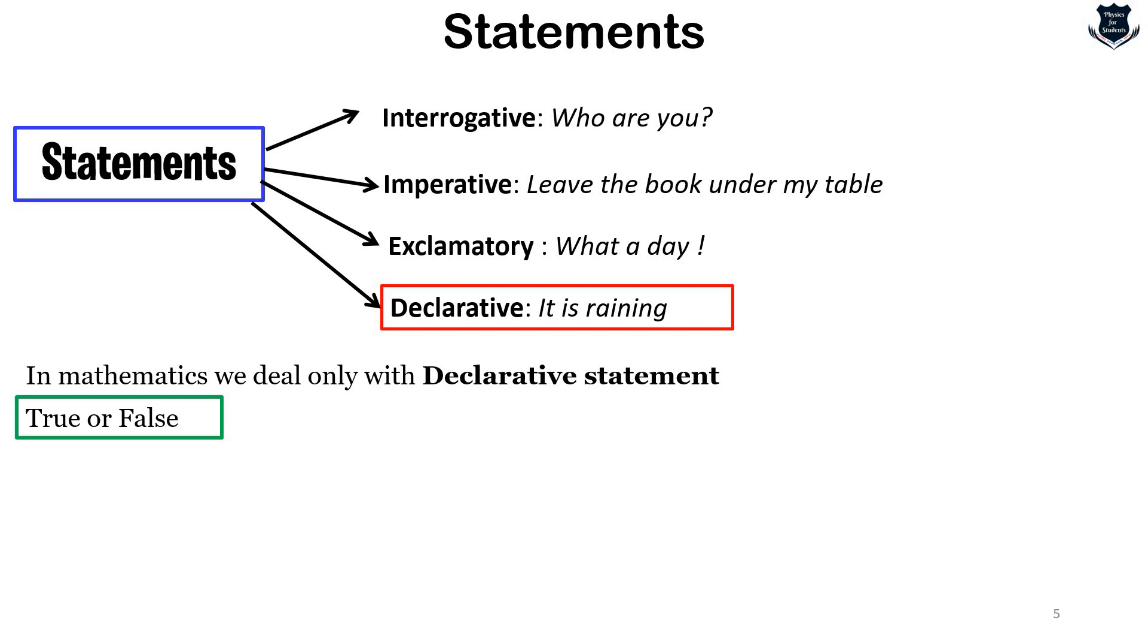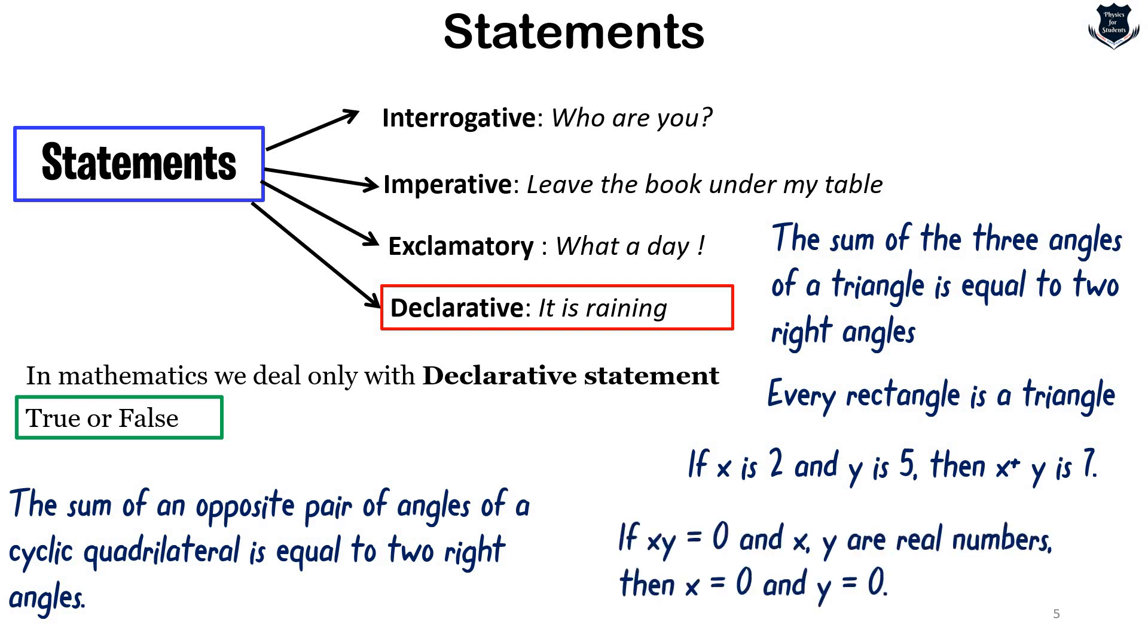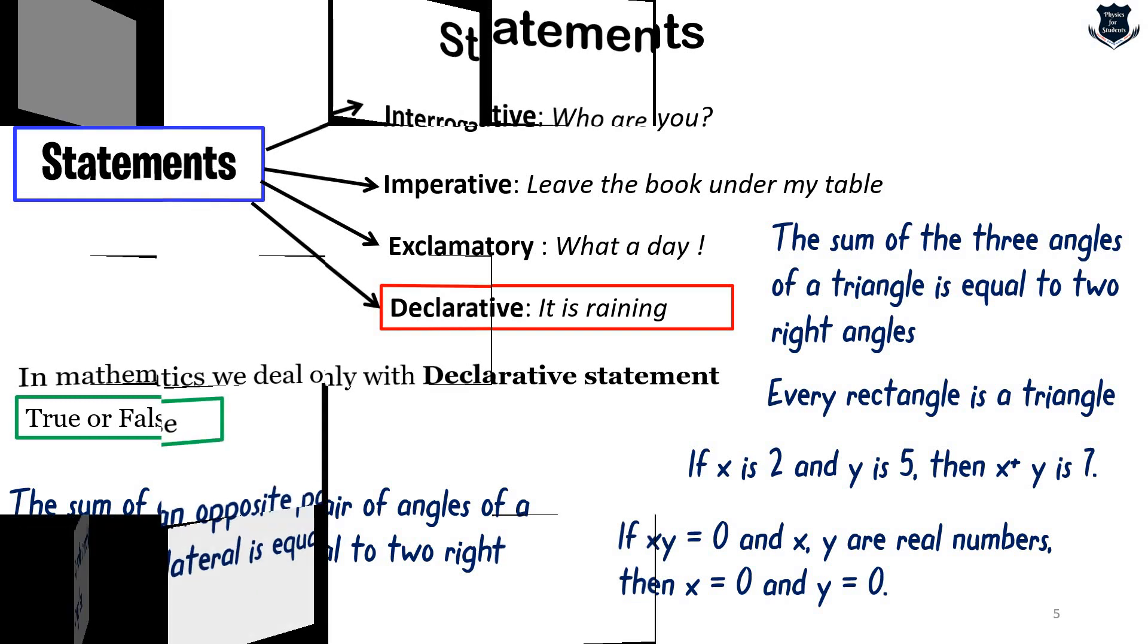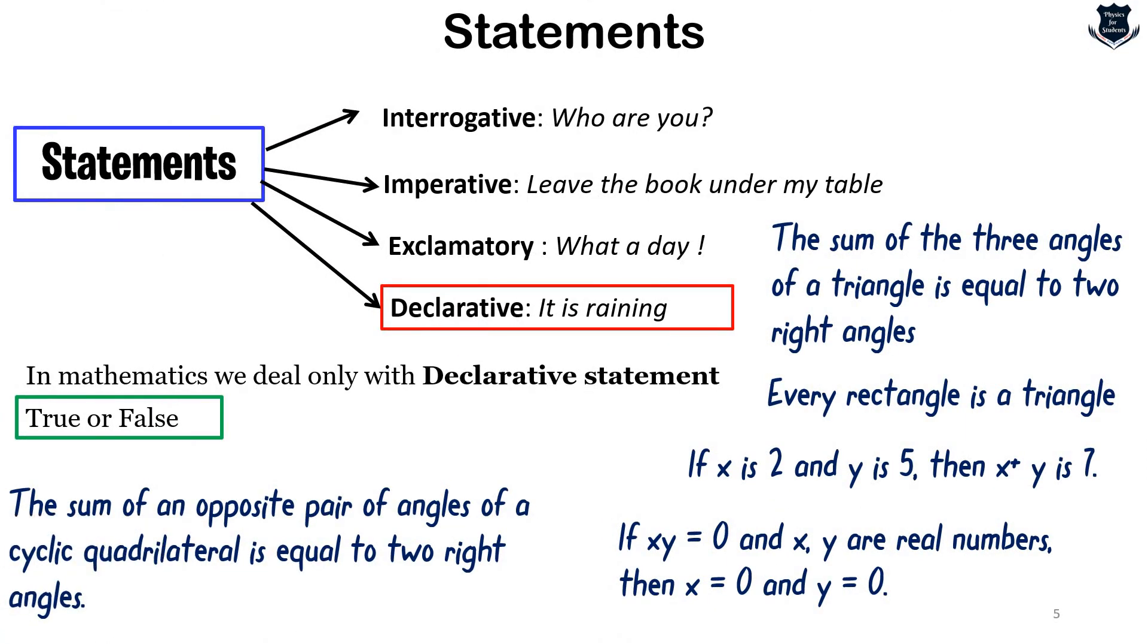Consider the following statements, some of which are true and false. The sum of an opposite pair of angles of a cyclic quadrilateral is equal to two right angles. The sum of three angles of a triangle is equal to two right angles. Every rectangle is a triangle. If x is 2 and y is 5, then x plus y is 7. If xy equals 0 and x and y are real numbers, then x equals 0 and y equals 0.